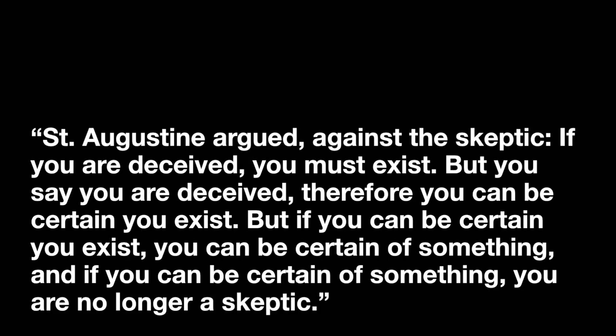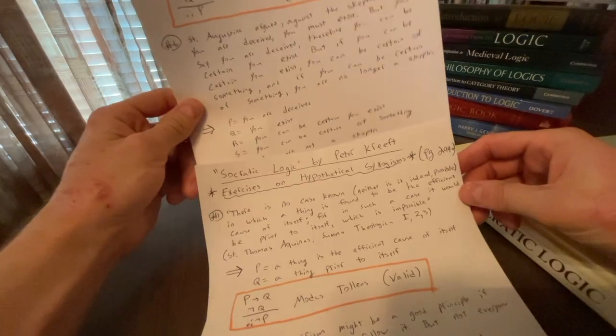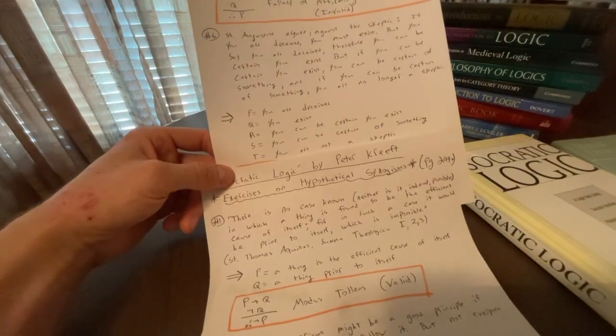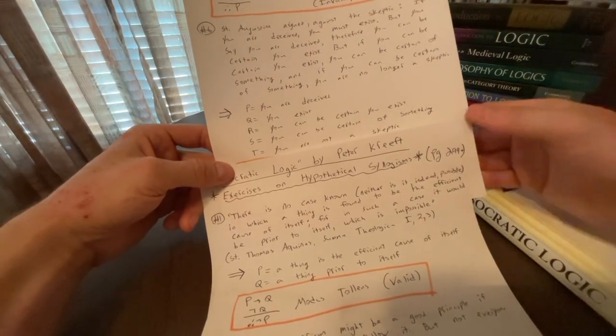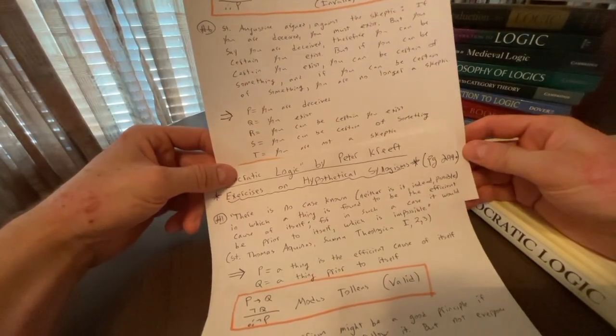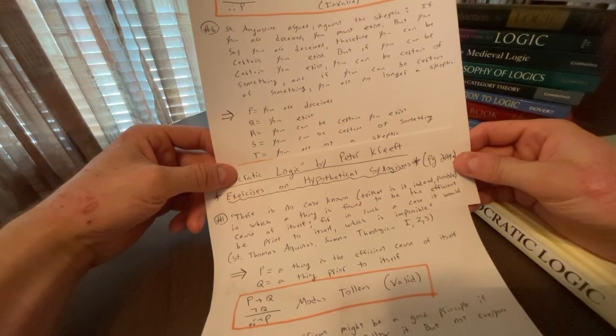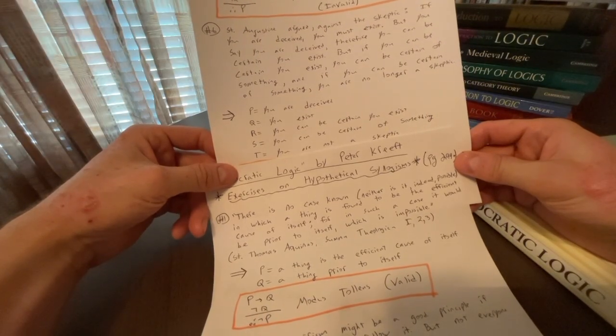So we have more than just a P and a Q. We have a P, Q, R, S, and T. So label those up and determine if that argument is valid or invalid. So that's the goal here. So we can say the following. This is what the textbook does, actually. So P is you are deceived. Q, you exist. R, you can be certain you exist. S, you can be certain of something. T, you are not a skeptic.